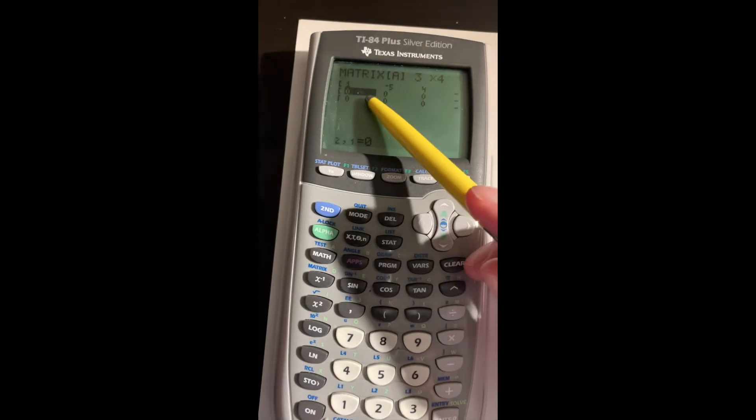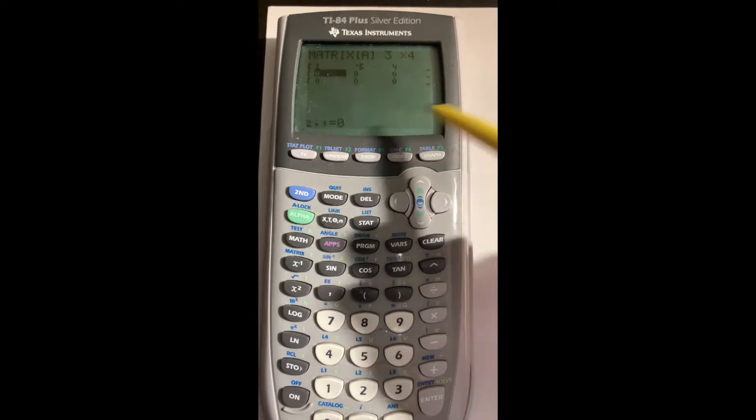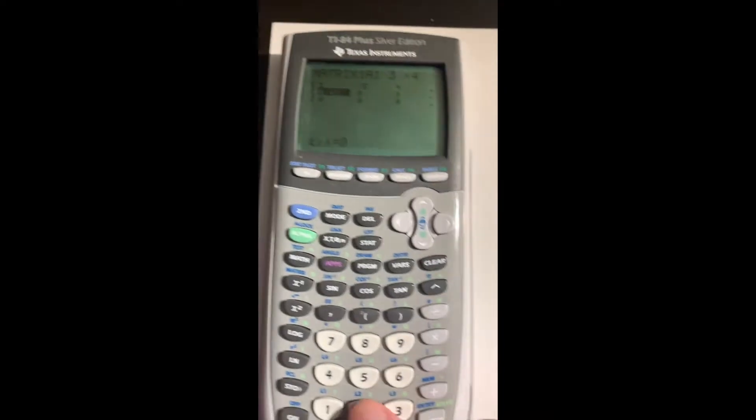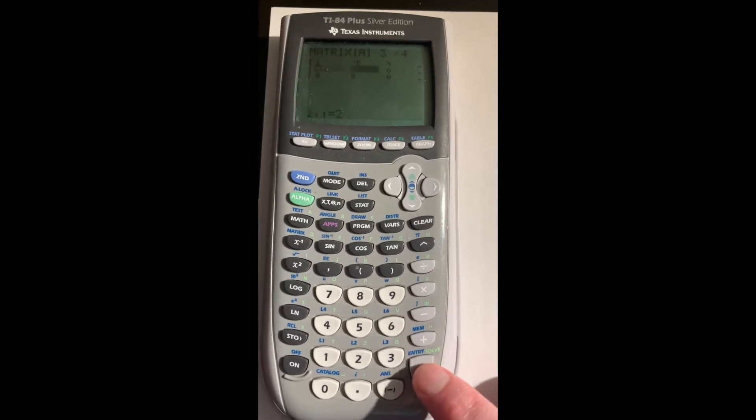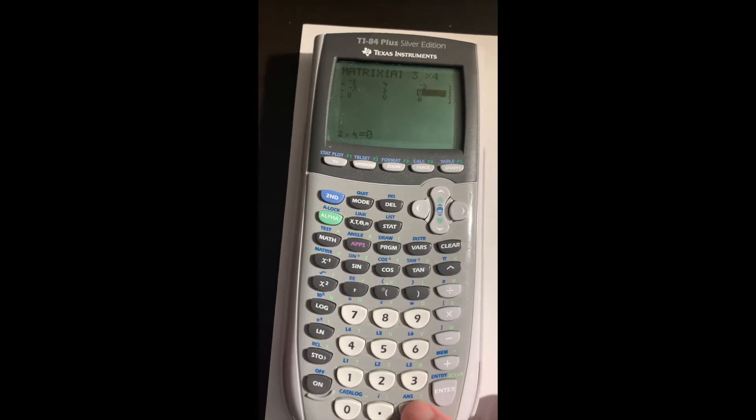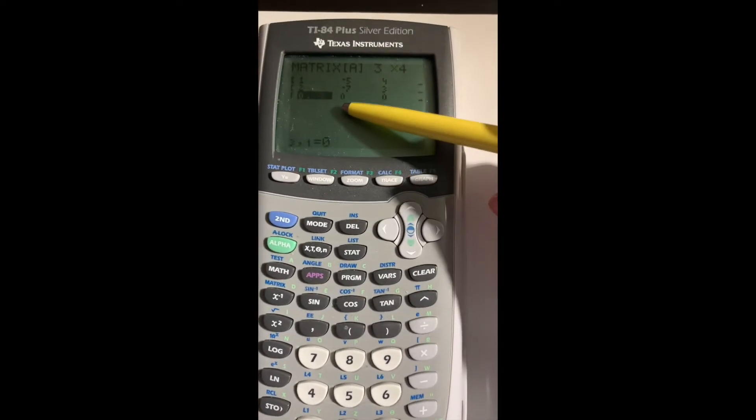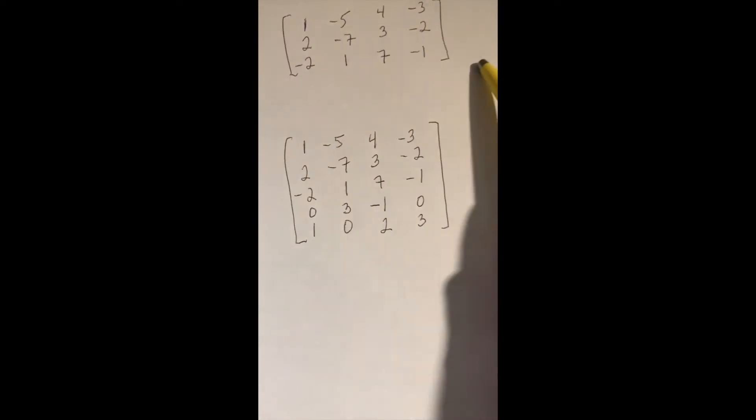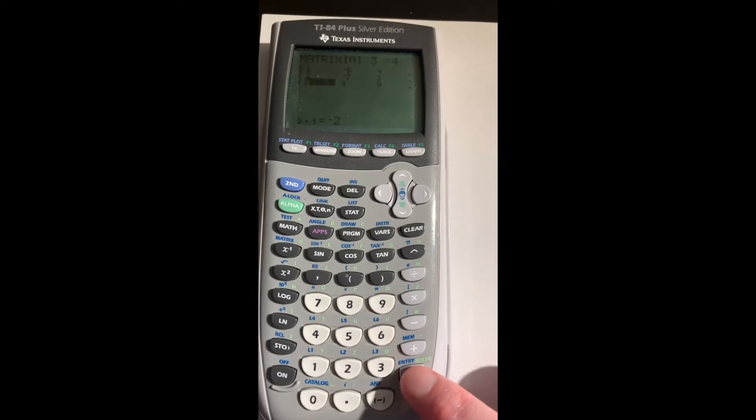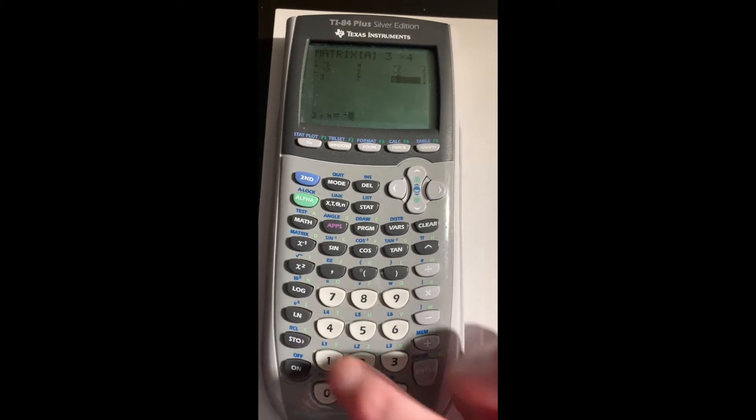After I entered the first row, the cursor jumped down to the first entry on the second row, which is convenient. So now I do the second row: 2 minus 7, 3 minus 2, hitting enter after each number. Then it hops down to the third row: minus 2, 1, 7, minus 1.